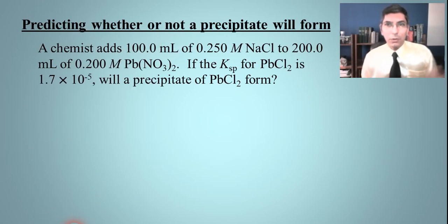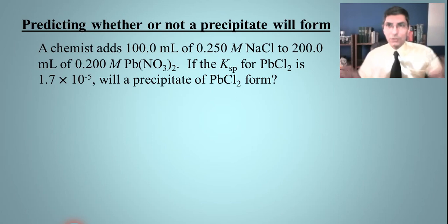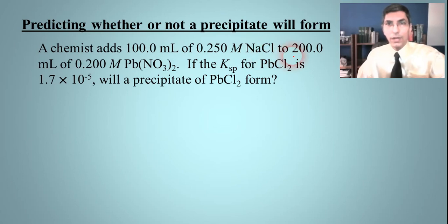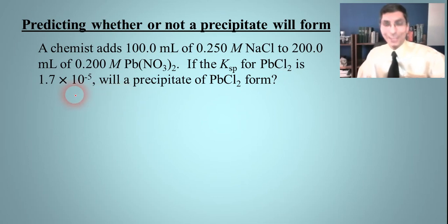In this video, we're learning about how to predict whether or not a precipitate will actually form. If we take two ionic compound solutions and mix them together, are you going to make a precipitate? Here we have an example: a chemist is adding 100 milliliters of 0.25 molar sodium chloride solution to 200 milliliters of 0.2 molar lead(II) nitrate solution. If the KSP for lead(II) chloride is 1.7 times 10 to the negative fifth, will a precipitate of lead(II) chloride form?